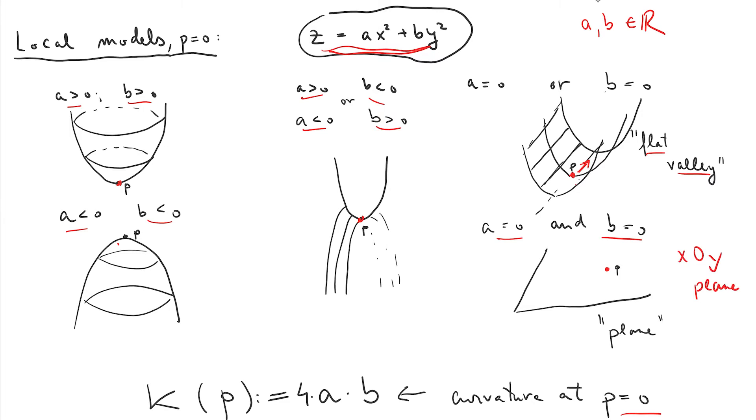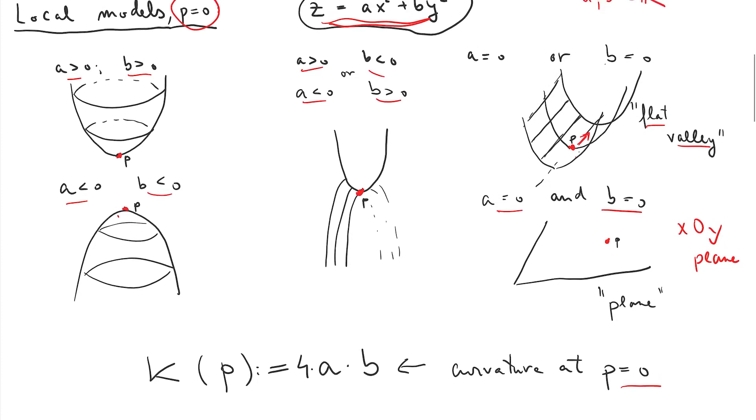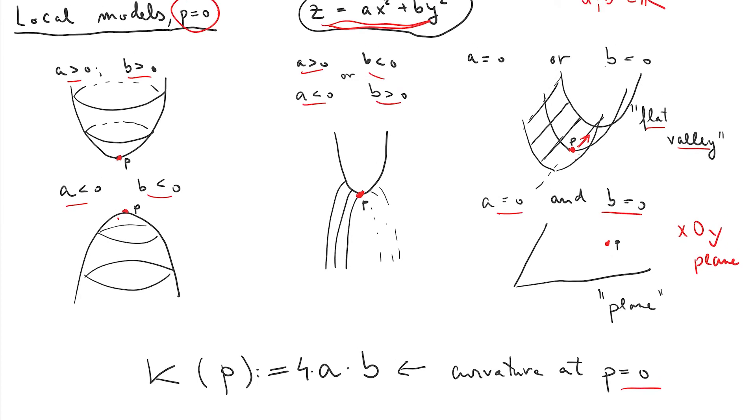So here we make a definition about the curvature of these surfaces at the point P equals zero, at the origin. Each of these surfaces contains the point at the origin. And then we make this following definition: I declare the curvature at the point P equals zero to be four times AB. Might as well call this the Gauss curvature with a bit of foresight. But before we move on, what does this definition really mean for each of these surfaces?